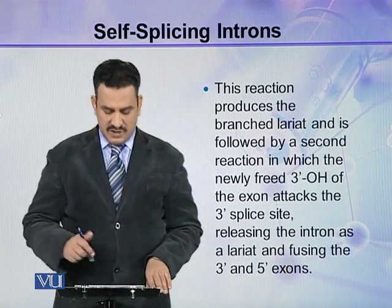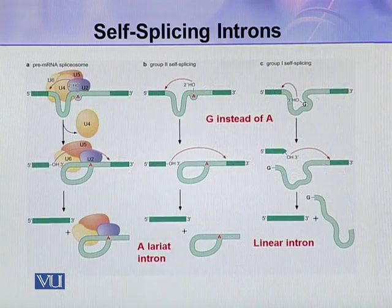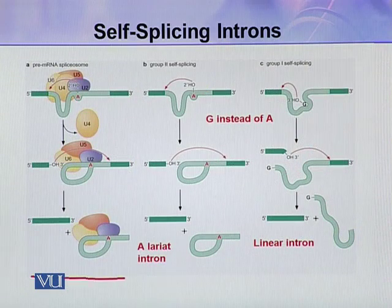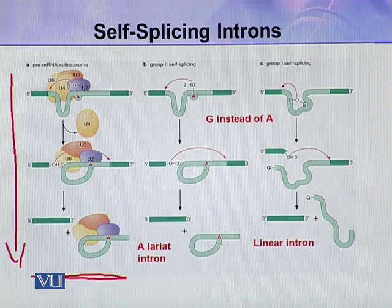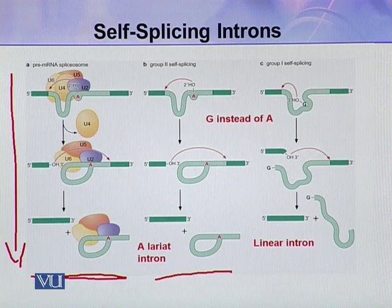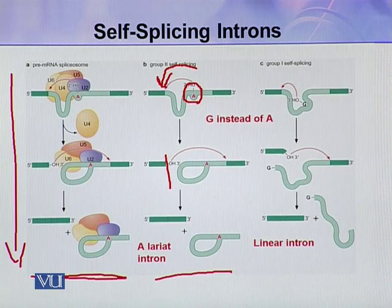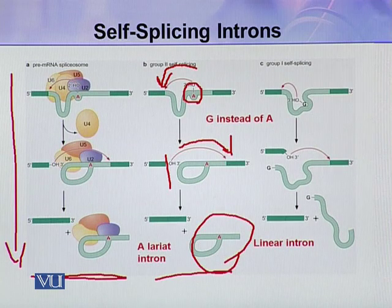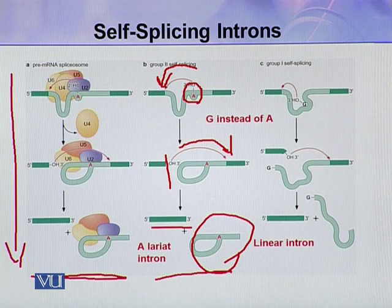This figure shows a comparison of all three types of splicing. The pre-mRNA spliceosome mechanism is shown, followed by group 2 self-splicing: the 2' hydroxyl of A attacks the 5' splice site, the phosphodiester bond is broken, then the free end attacks the 3' splice site, the lariat is released, and the two exons are joined.